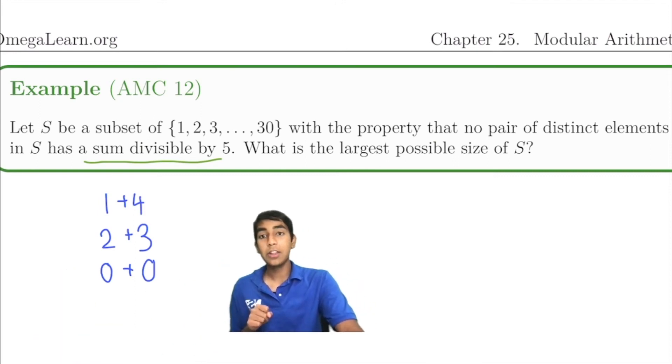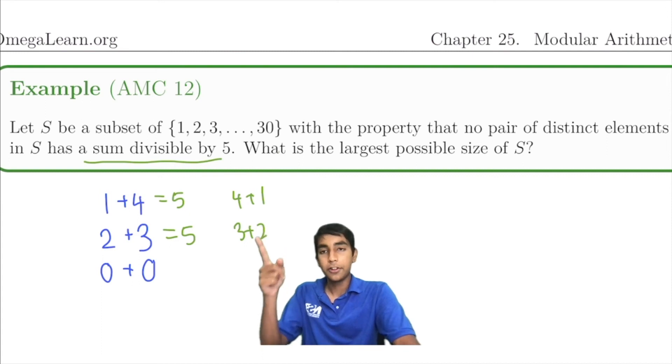Why are these the only possibilities? Because all other possibilities will always result in having some kind of remainder. Because 1 plus 4 is 5, 2 plus 3 is 5, and the other cases, 3 plus 2 and 4 plus 1 are essentially the same thing. They're just the numbers flipped together. So it's not really a different case.